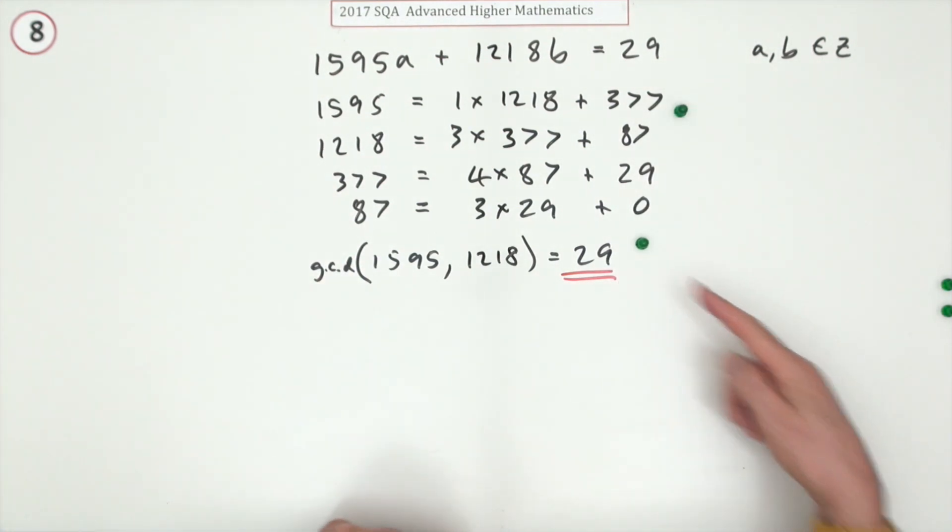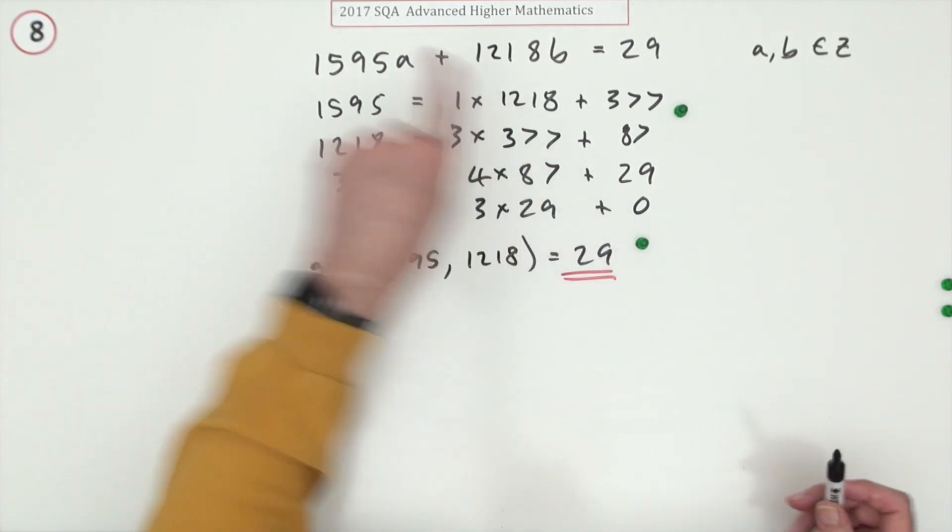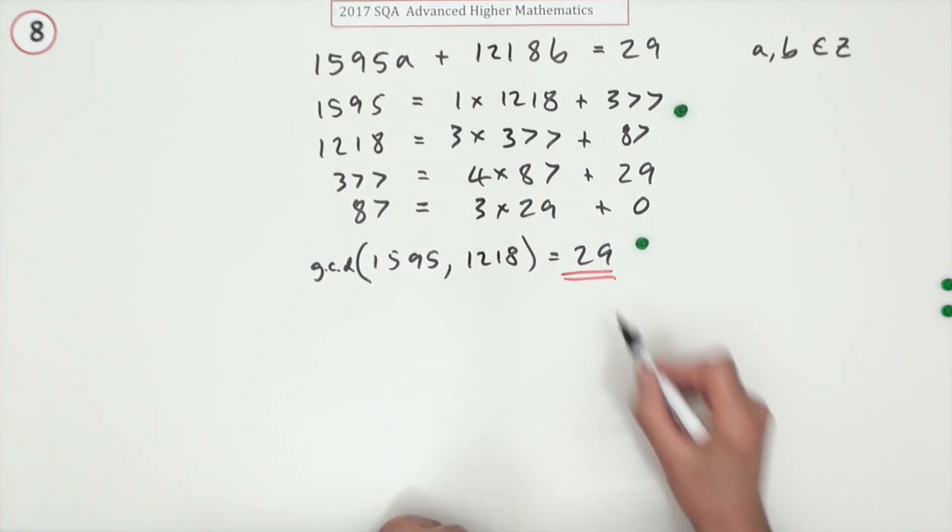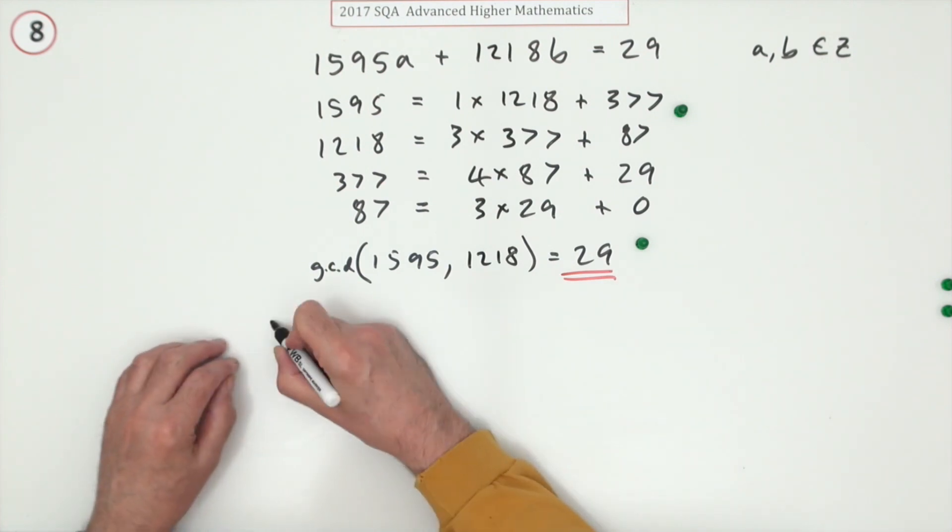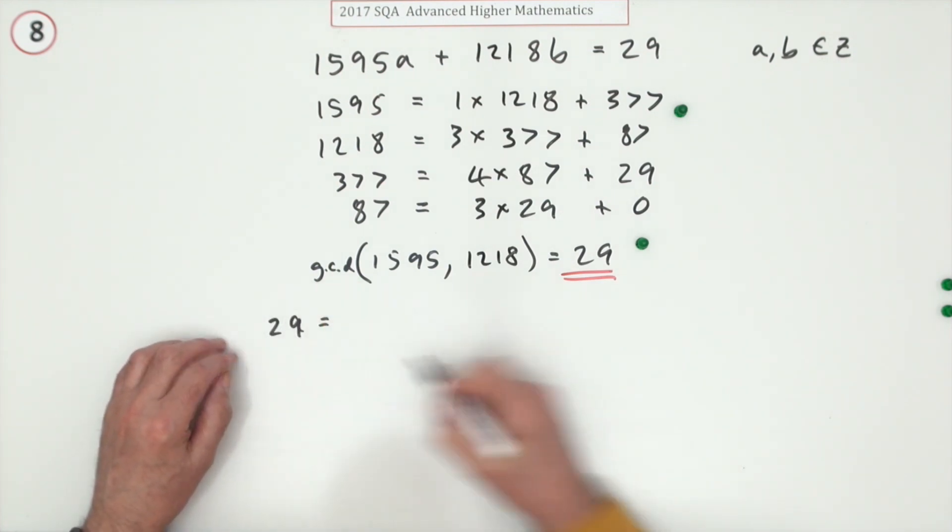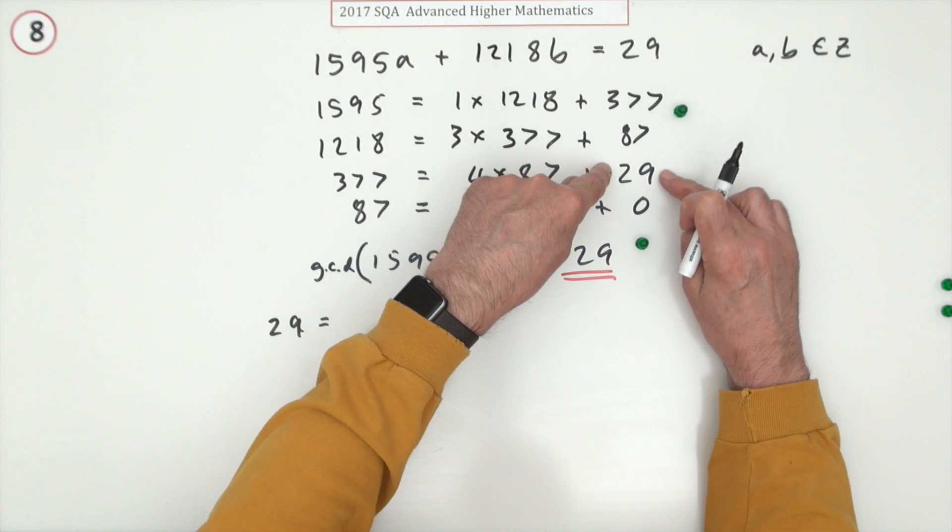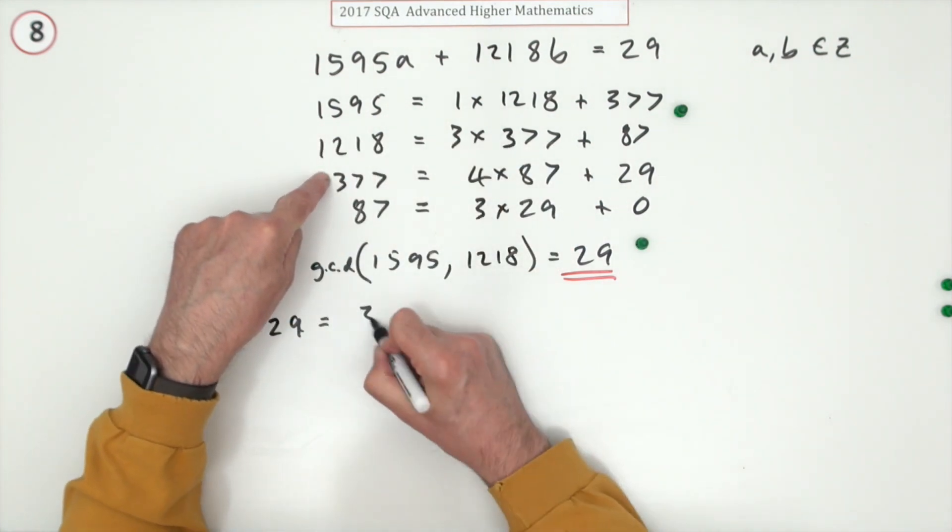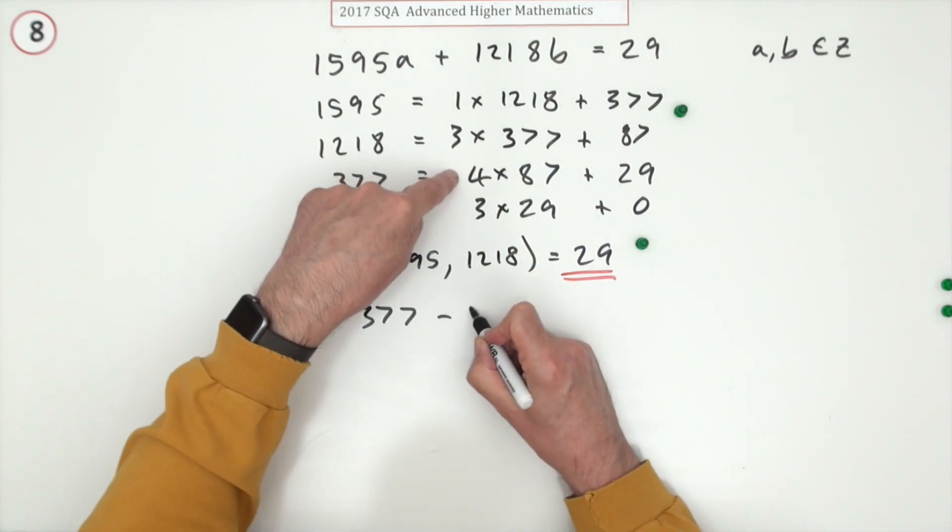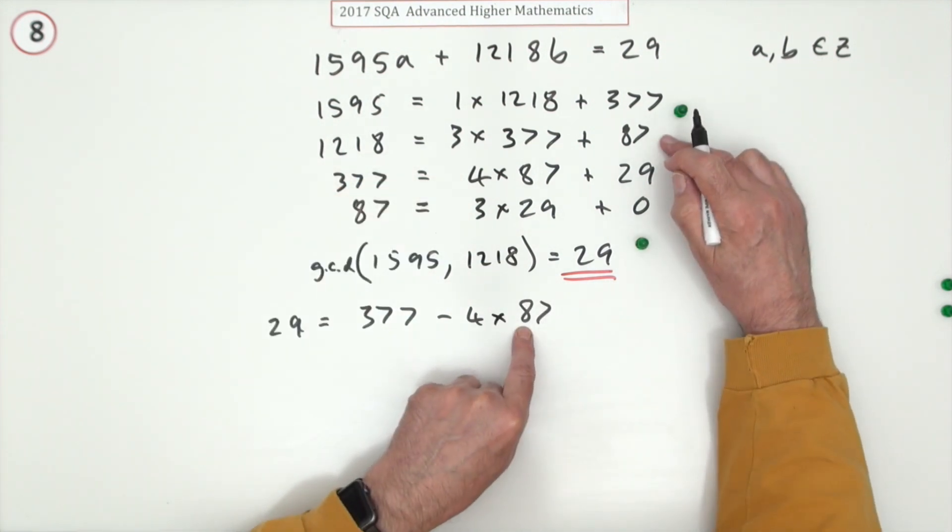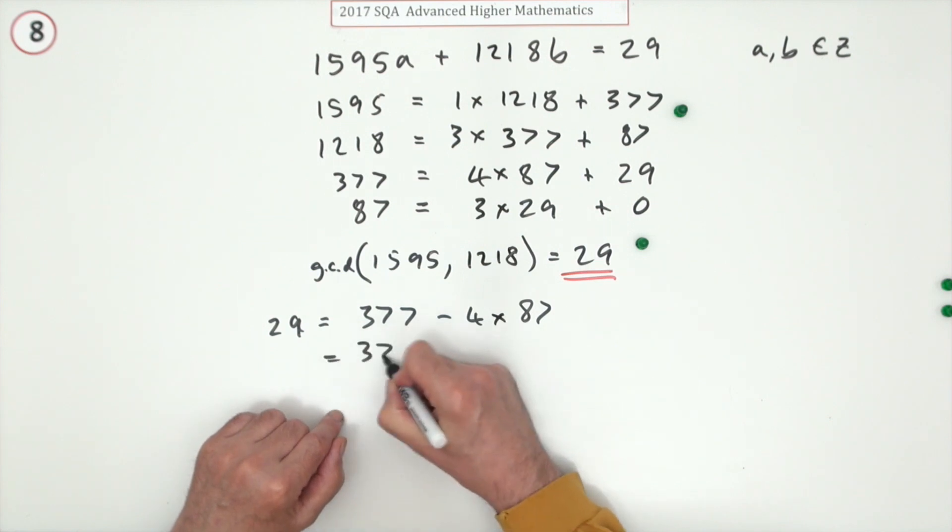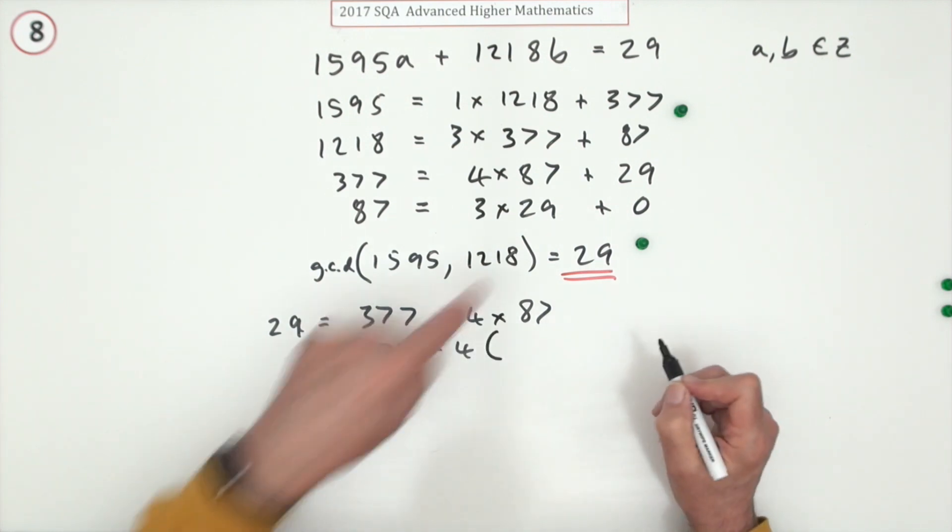Now to actually solve this, I'm going to start with this and work my way back. So it says 29 should equal this. Using this line, 29 would equal 377 minus 4 times 87.